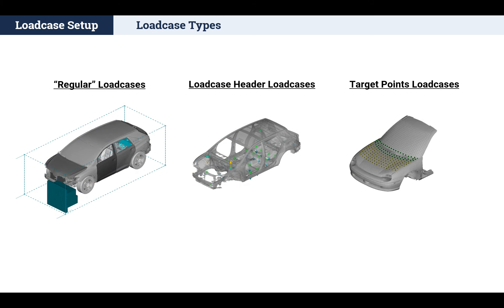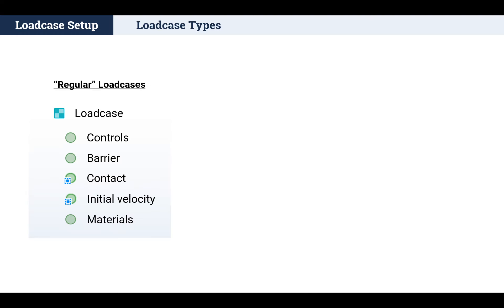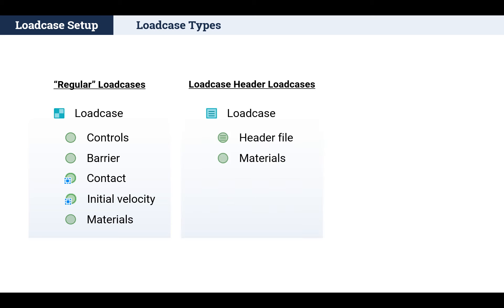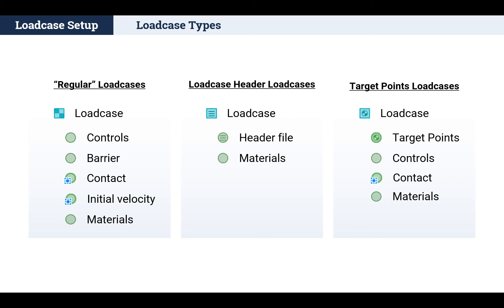Three main types of load cases are supported in the ANSA Modular Environment. Regular load cases, which consist of plain library items and sometimes load case-specific subsystems. Load case header load cases, which contain a load case header library item that can be used to set up a load case for Nastran or Abacus Solver with the help of a load case setup assistant template. And target points load cases, which contain a target points library item that generates simulation runs based on a selection of target points, mainly used for pedestrian and occupant protection load cases.